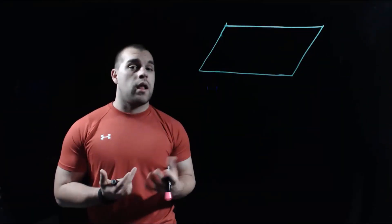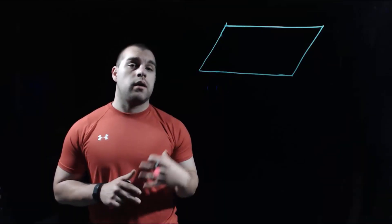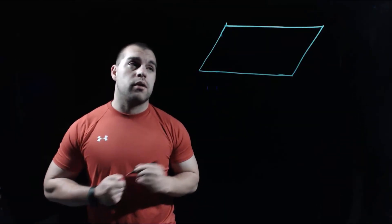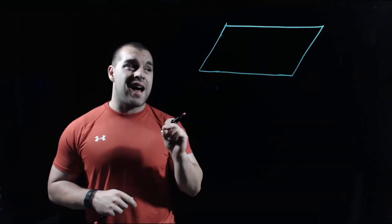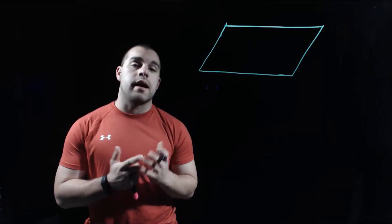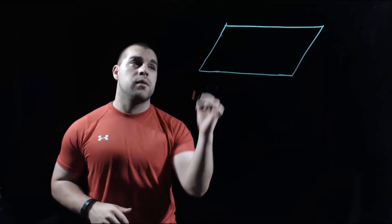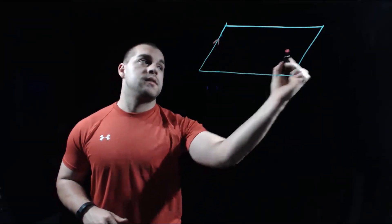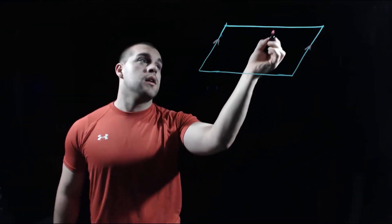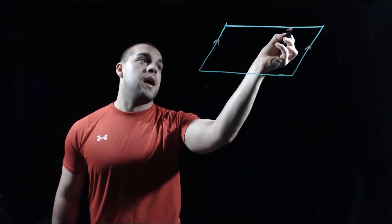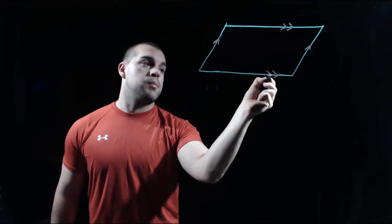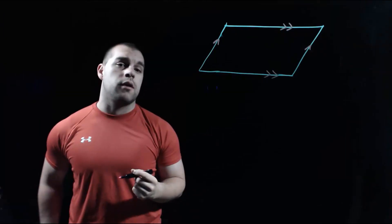Here we've got a picture of a parallelogram, and I'm going to put some markings on this picture based on those five properties. The first property says that opposite sides are parallel to each other, and to show that sides or lines are parallel, we put arrows on them. I'm going to put one arrow on each of the left and right sides, and two arrows on the top and bottom sides to show those pairs are parallel.